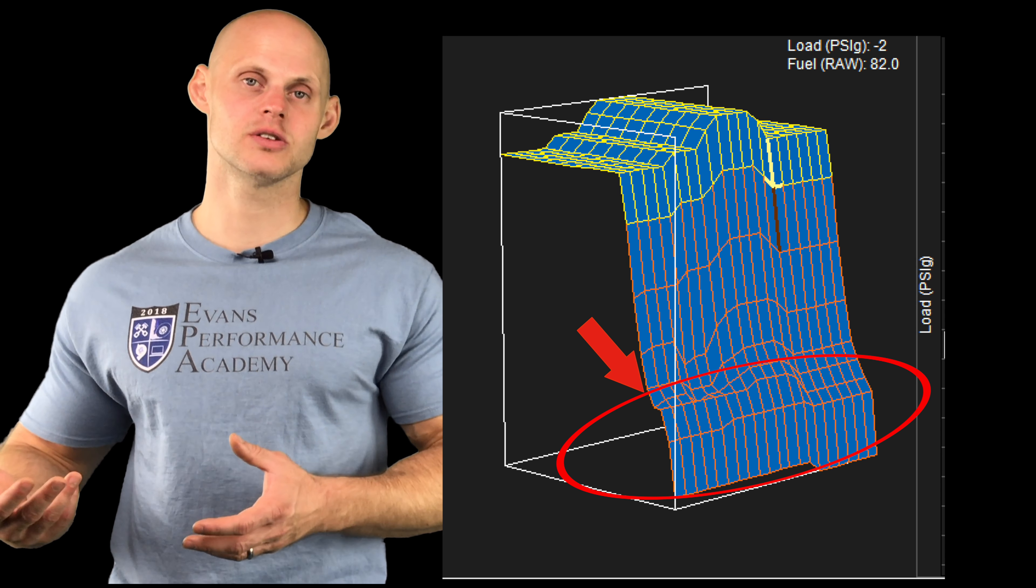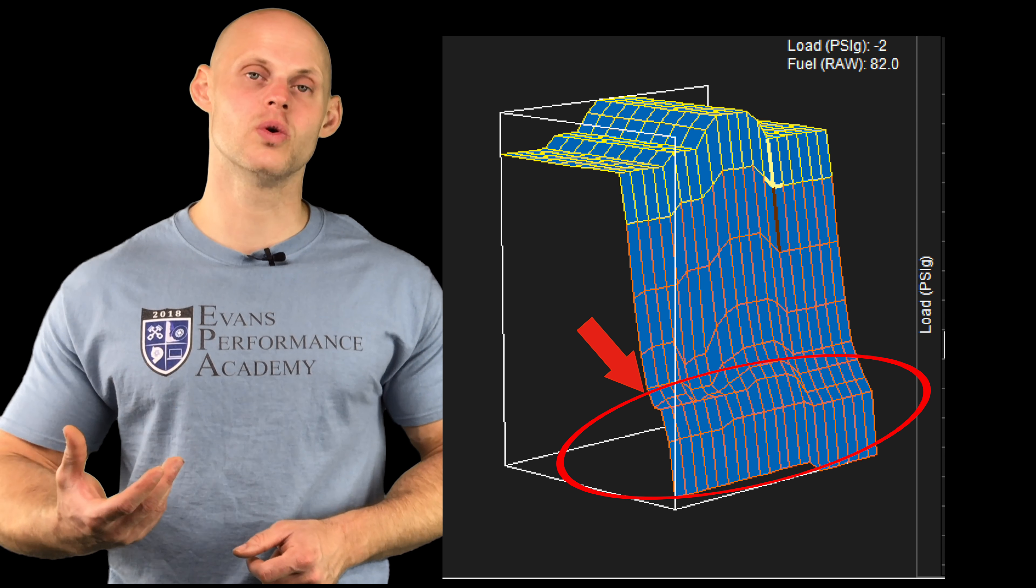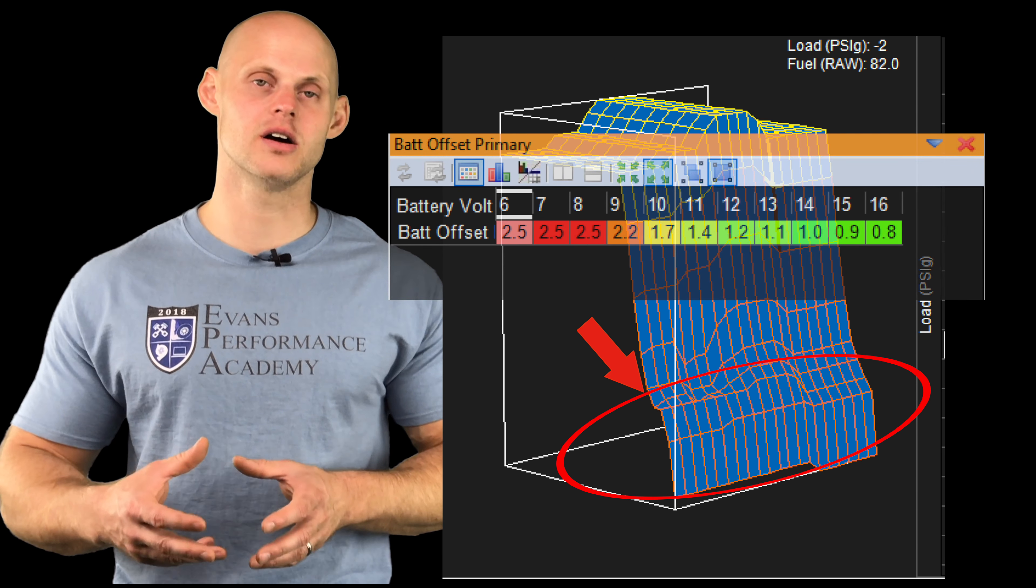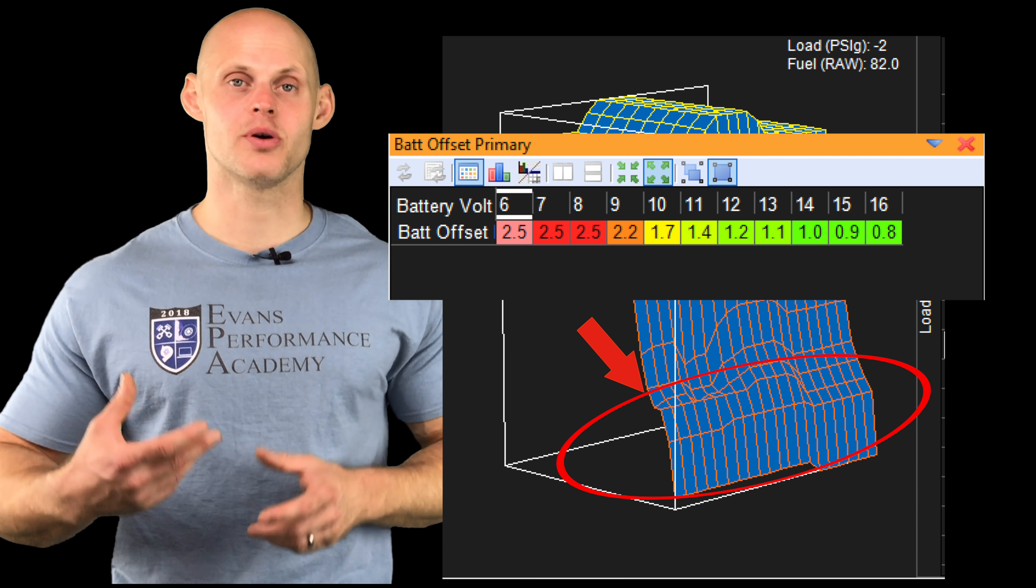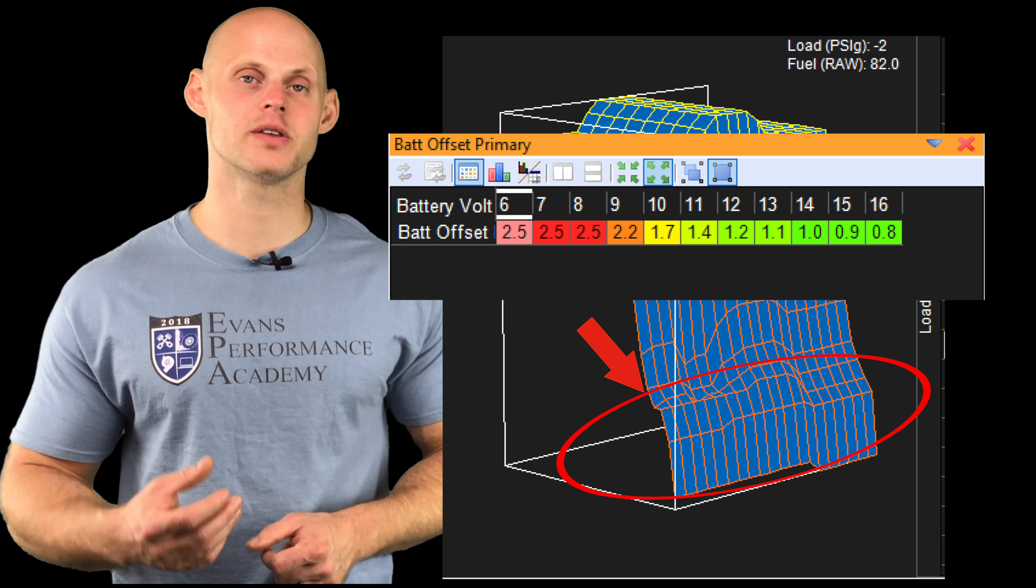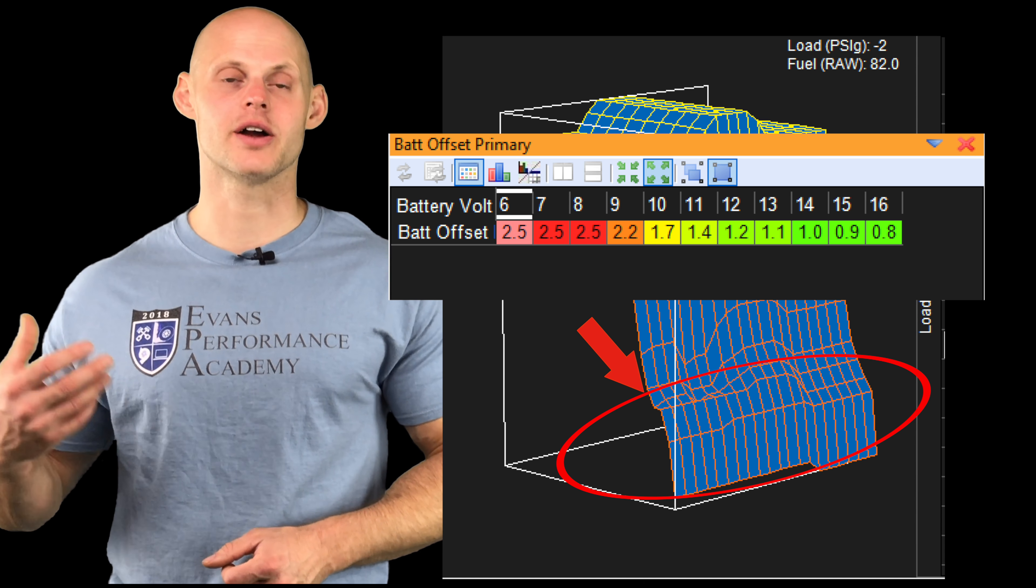We're going to be increasing those values to give us the appropriate fuel to absorb that lack of the dead time in the table. At idle and part throttle driving, we're going to have a much lower injector pulse width compared to a higher throttle angle and a higher load.